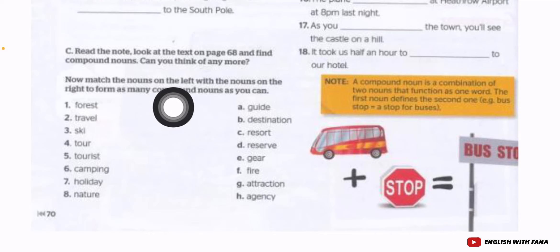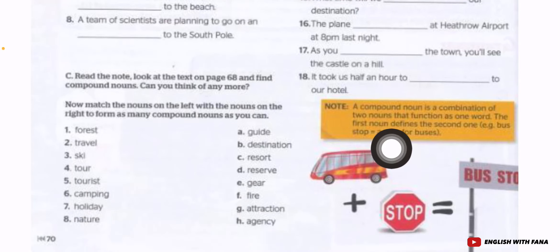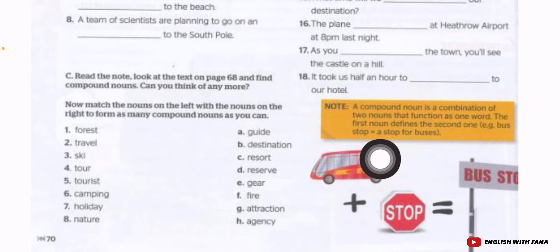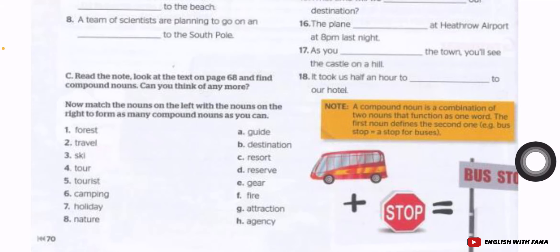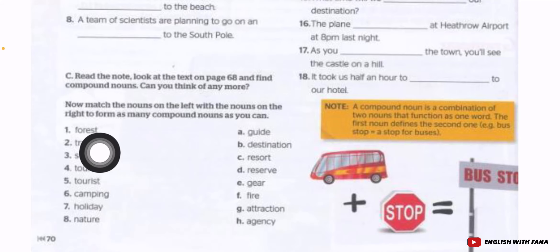Now match the nouns on the left with the nouns on the right to form as many compound nouns as you can. A compound noun is a combination of two nouns that function as one word — the first noun defines the second. For example, 'bus stop' is a stop for buses — it's a place, a hentian bus. That is what compound nouns are.